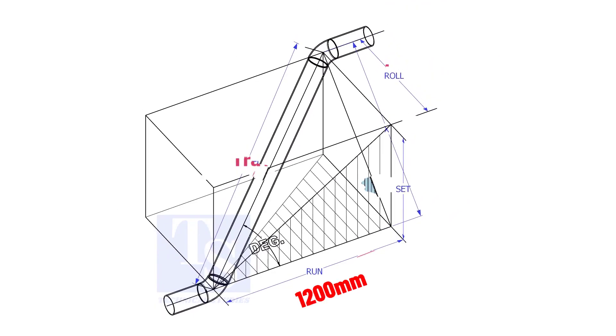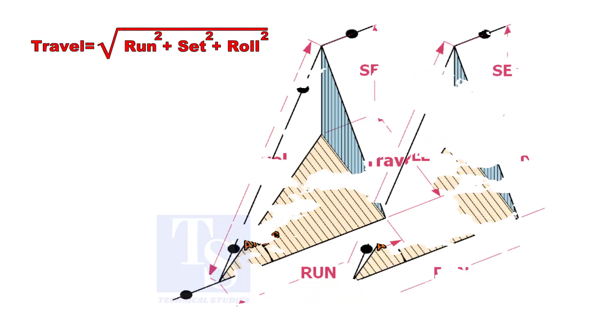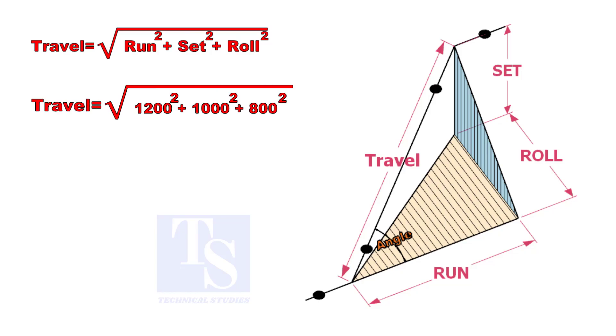Assume that the run is 1200 mm, set is 1000 mm and the roll is 800 mm. Calculate the travel length. Let us calculate.